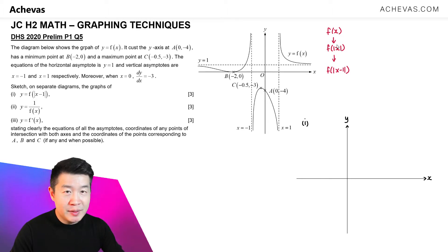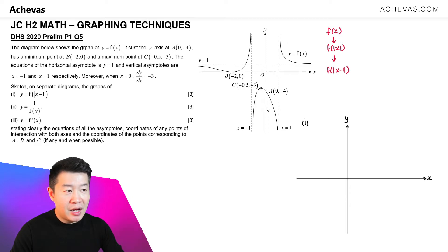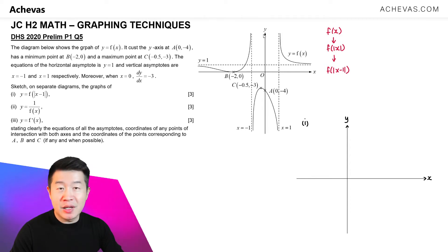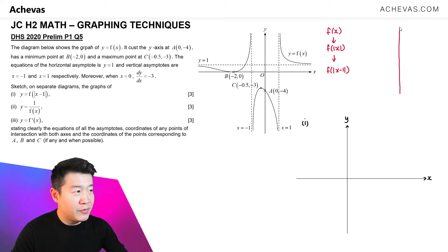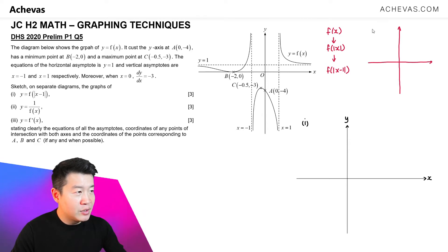If I were to do this particular transformation, the negative portion — the portion on the negative x-axis side — will disappear. I will be keeping only the part on the positive x-axis side, and this portion is going to be reflected by the y-axis. So I'm sketching the graph of y = f(|x|).